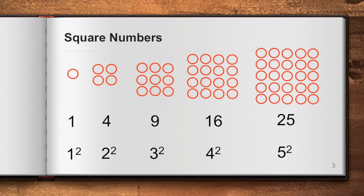So if you have recognized the pattern, what do you think is the next number in the sequence? That is 6 squared, which is equal to 36.